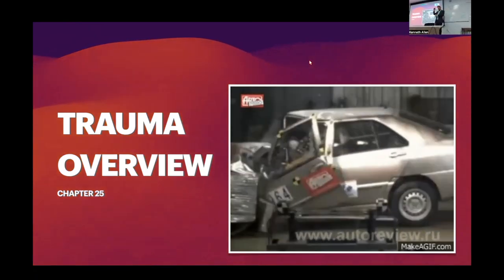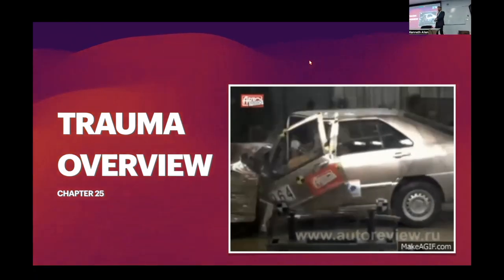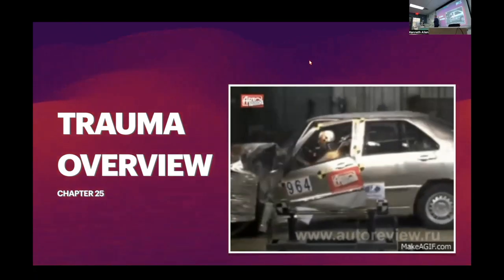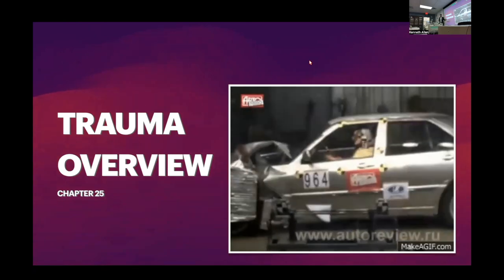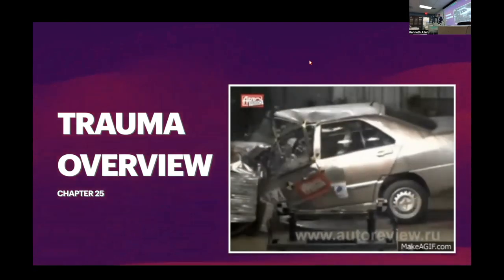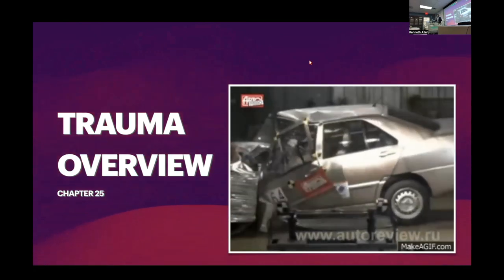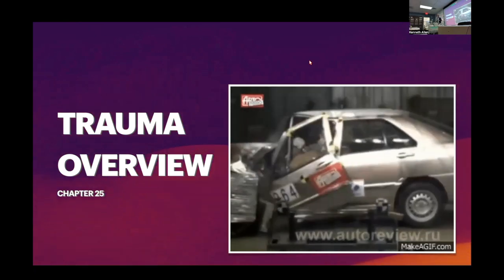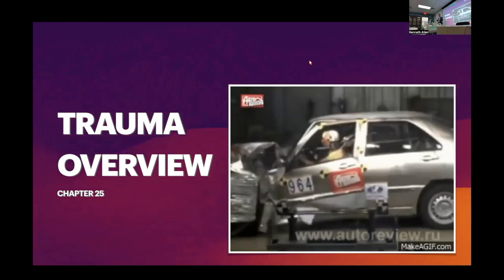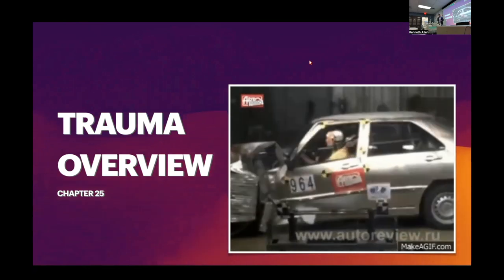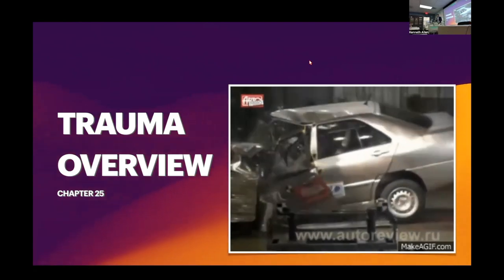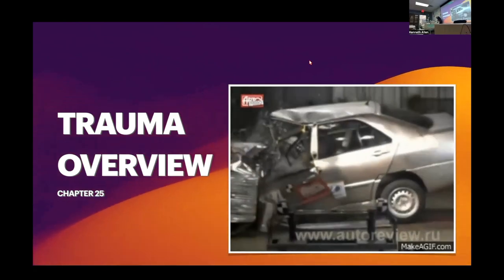C-spine comes into play at the end of our scene size-up and the beginning of our primary assessment. For severely injured trauma patients, we do a head-to-toe first, then a SAMPLE history — a little opposite of what we've been doing. So: scene size-up, primary assessment, then secondary starting with a quick head-to-toe, followed by SAMPLE/OPQRST. We really need to know where they were when the car hit them, how they rolled, and what damage was done — then we get into past medical history.